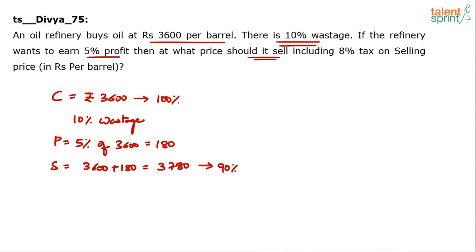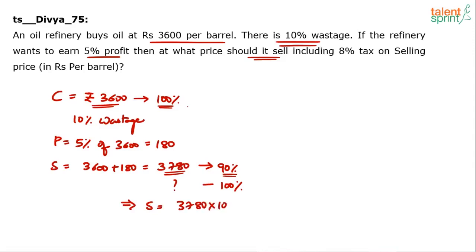The costing of rupees 3600 is on 100% volume. But this selling price of 3780 is only for 90%. So for 100%, cross multiply: selling price = 3780 × 100 / 90. This is without taxes.